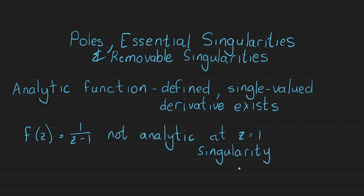So the question in this video is: how do we interpret the singularity, are there different kinds of singularities, and how do we go about understanding this whole thing? The way this is characterized is by looking at how the function goes to infinity. If we have 1/0, it means the function goes to infinity — it becomes very large. Does it approach infinity in a controlled way or in an uncontrolled way? And the way that happens affects the characterization of singularities.